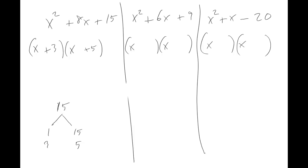For x squared plus 6x plus 9, what numbers multiply to equal nine? One times nine, or three times three. Which of those adds up to equal six? Three plus three equals six, so the numbers are three and three — (x plus 3)(x plus 3).